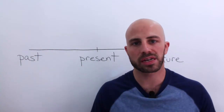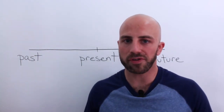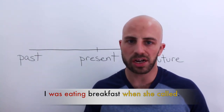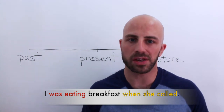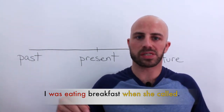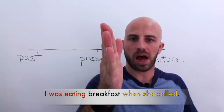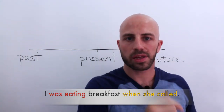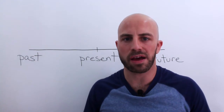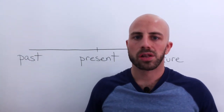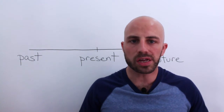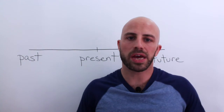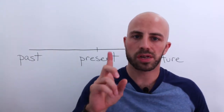Let's look at an example: 'I was eating breakfast when she called.' That is past continuous because I was eating breakfast — I wasn't finished — and then she called, and then I probably finished after. Look at the rule, look at the example, and draw a picture on the timeline that shows rule number one.